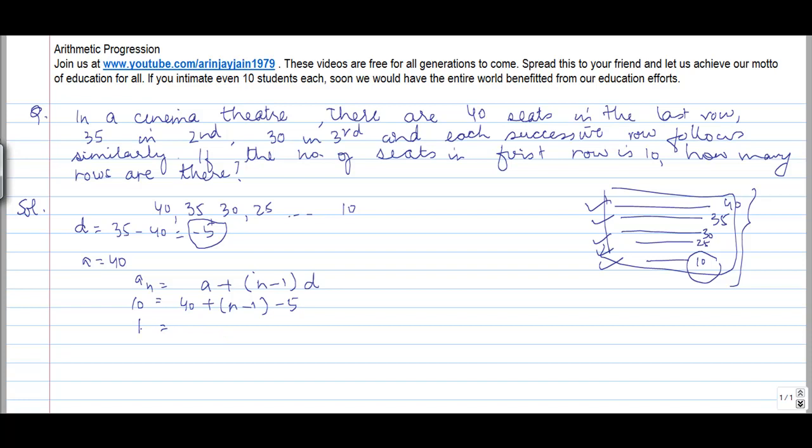Rest is all simple. 10 equals 40 minus 5 into n is minus 5n, minus 5 into minus 1 is plus 5. 10 is equal to minus 5n plus 45. Now transposing 5 into this side I get 5n, and moving 10 to this side I get 45 minus 10 is equal to 35. n is equal to 35 divided by 5 is equal to 7.